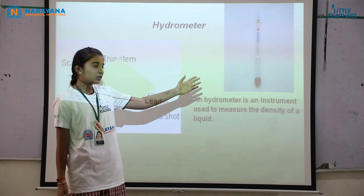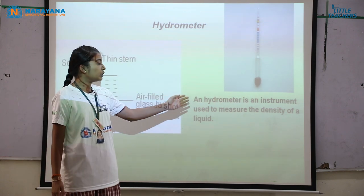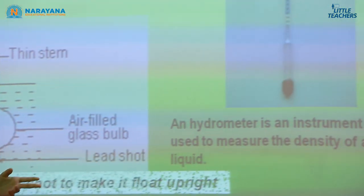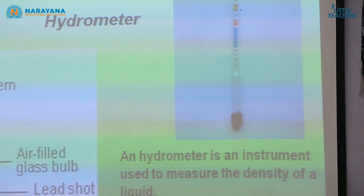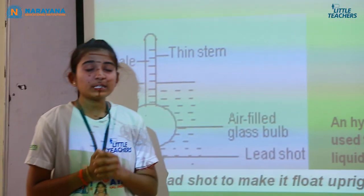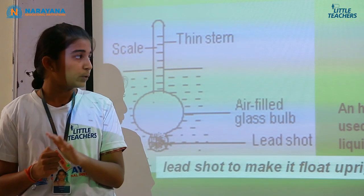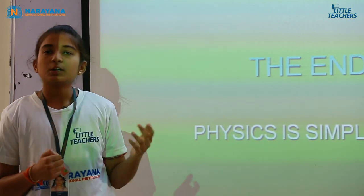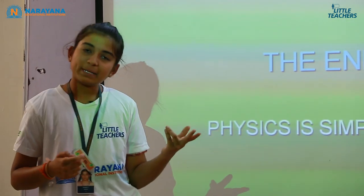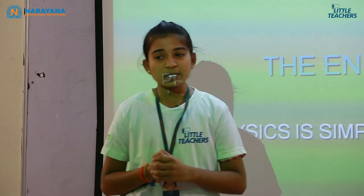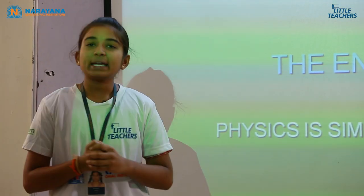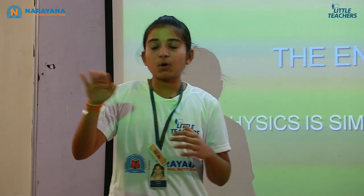A hydrometer is an instrument used to measure the density of a liquid. A lactometer is an instrument used to measure the purity of a liquid. One more application of Archimedes principle is swimming — when we swim, we float in the water, which is also an example of Archimedes principle.